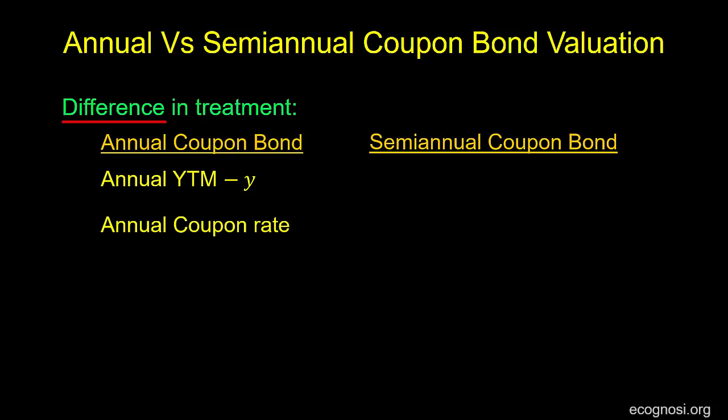But in the semi-annual coupon bond case, we need to adjust these two values to reflect the fact that the periodicity is equal to 2. So we are given the annual yield to maturity, which in the case of a semi-annual coupon bond is by convention expressed as 2 times the semi-annual discount rate. Therefore, in order to get the semi-annual discount rate — which is the rate appropriate for discounting a semi-annual bond's promised cash flows — we need to divide the yield to maturity by 2. Similarly, we need to divide the coupon rate by the periodicity as well before calculating our coupon payments.